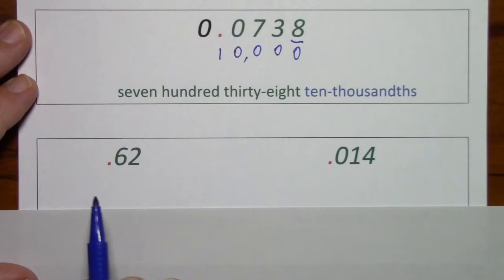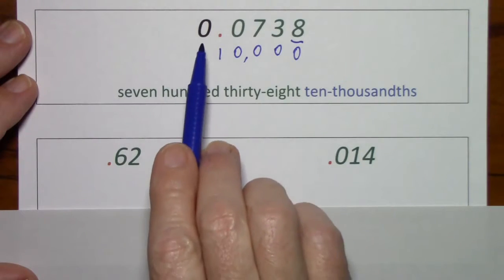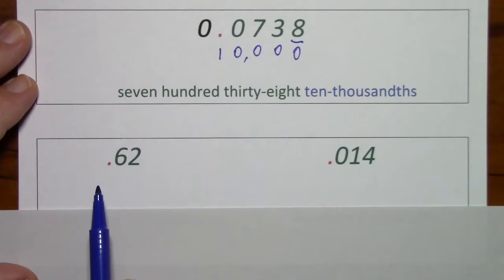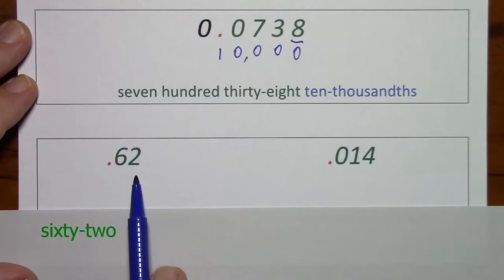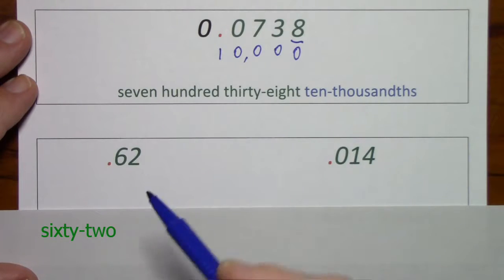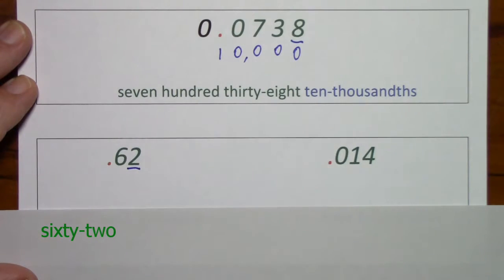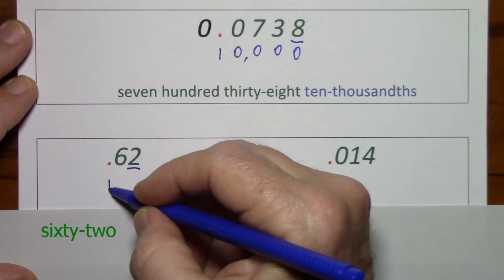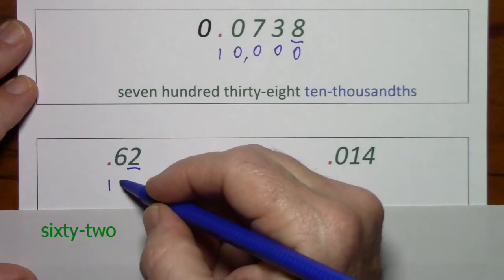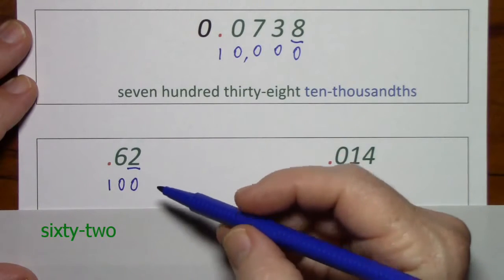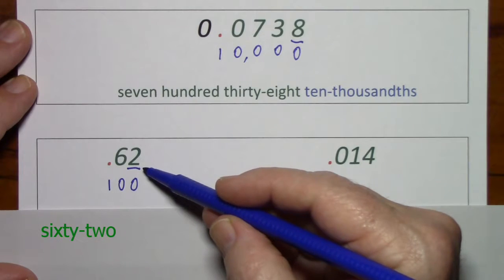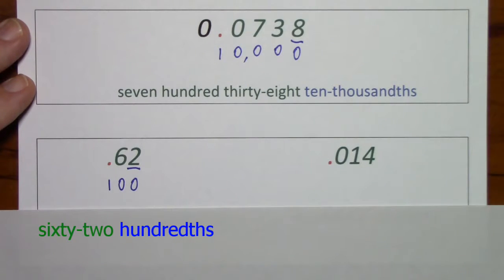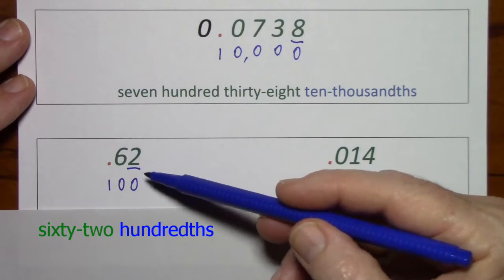We'll look at two more here. Notice I did not put a leading zero here, though I did put it in the previous example — it's not required. To say what this value is, first you say the number sixty-two. Then to identify that it's a decimal, you identify the place value of the last digit. If you put a one under the decimal point, you can see the place value of the last digit is hundredths. So this is sixty-two hundredths.